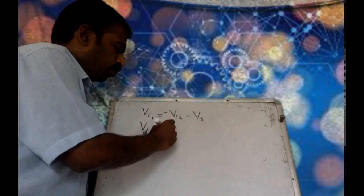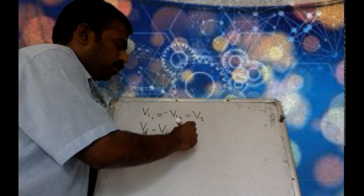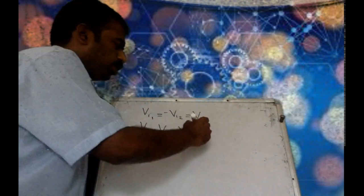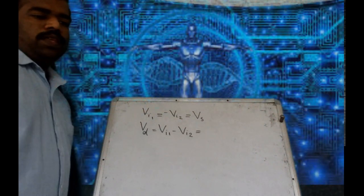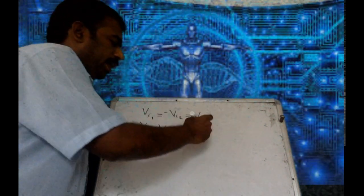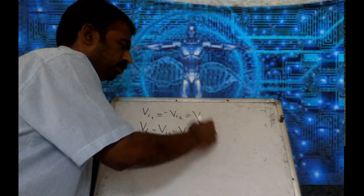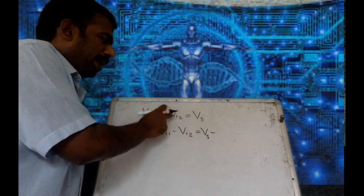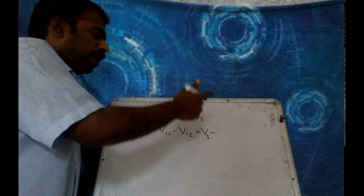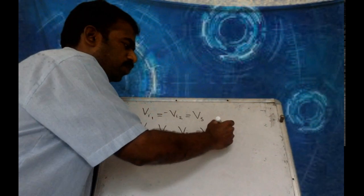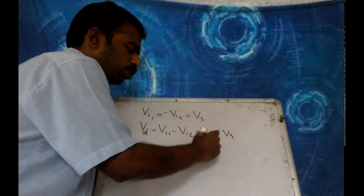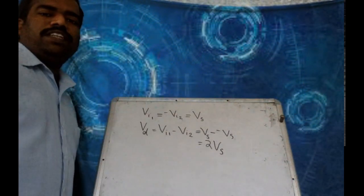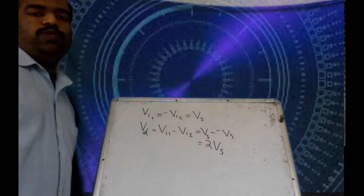Vd equals Vi1 minus Vi2. Vi1 equals Vs and Vi2 equals minus Vs. So you will get Vd equal to 2Vs — the difference voltage is 2Vs.